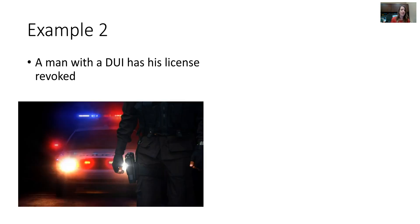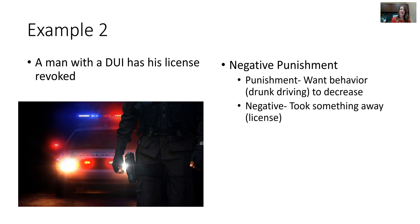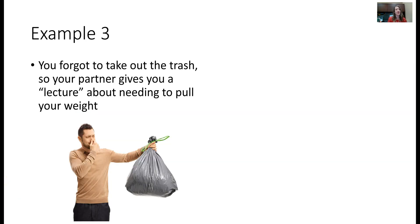Here's another example: a man gets a DUI and as a result his license is revoked. This is an example of negative punishment. Punishment because we want the behavior — drunk driving — to decrease. And negative because we took something away to make that happen: revoking his license.